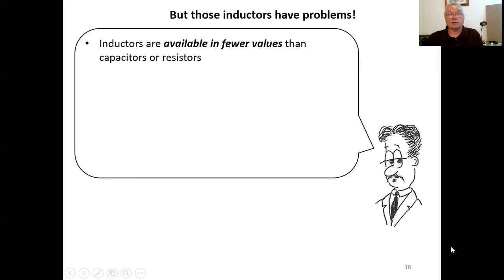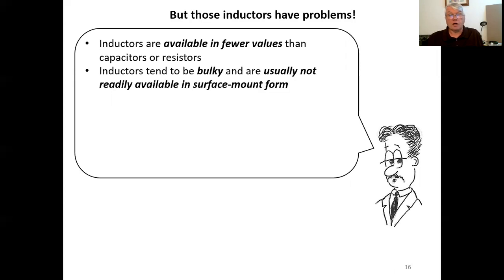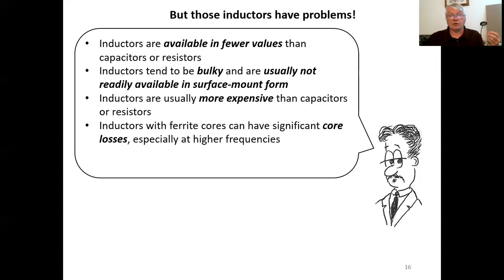But those inductors have problems. Inductors are practically available in fewer values and resistors or capacitors. Inductors tend to be bulky and are usually not readily available in a surface mount form for compact implementation. Inductors are usually more expensive than capacitors or resistors. Inductors that have ferrite or iron cores can have significant core losses at higher frequencies. And inductors have losses associated with their wire. These losses represent resistive components that make the inductors non-ideal. They look to be inductors that also contain resistance. They're not perfect inductors. But so what can we do?